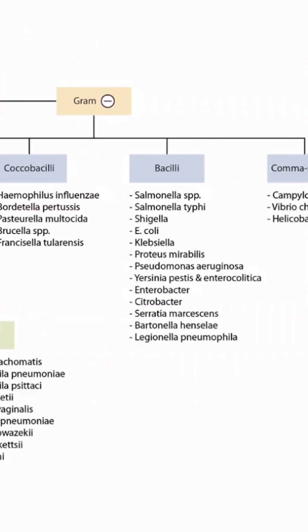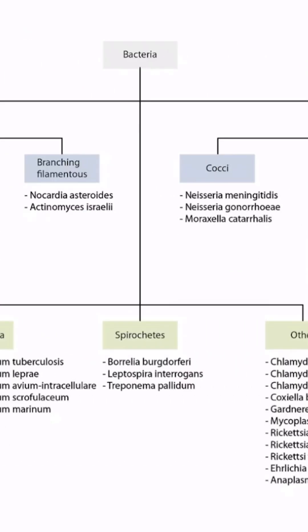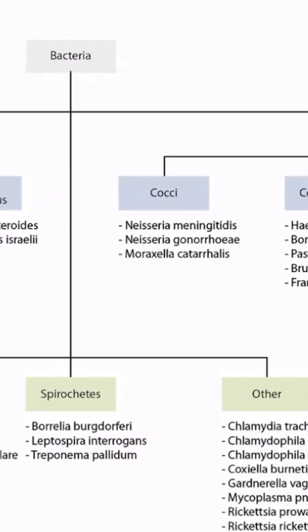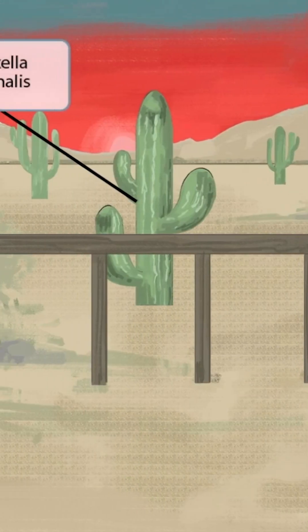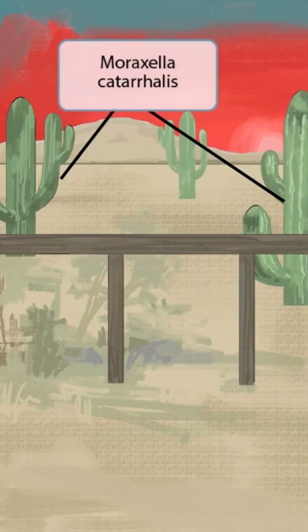This is our bacteria overview figure, and in this video we'll be discussing Moraxella catarralis, which you can see right here. This scene will take place out in the desert near some cacti. Cactus sounds kind of like catarralis, so we've shown several cacti in the image to help you remember that this image is about Moraxella catarralis.